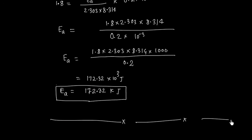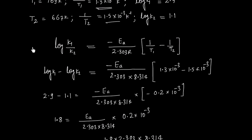So this is an easy problem and this only relates this formula, log K1 by K2 is equal to minus Ea by 2.303R, 1 by T1 minus 1 by T2.